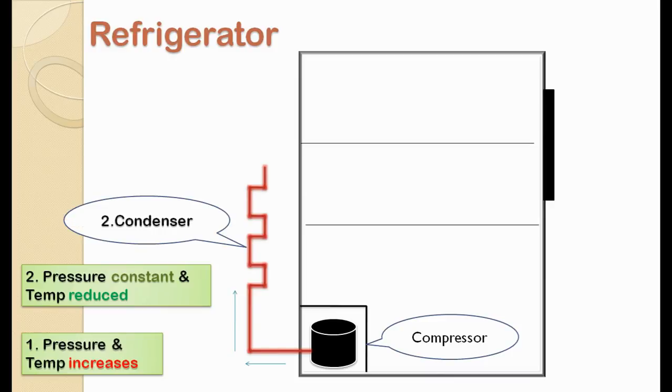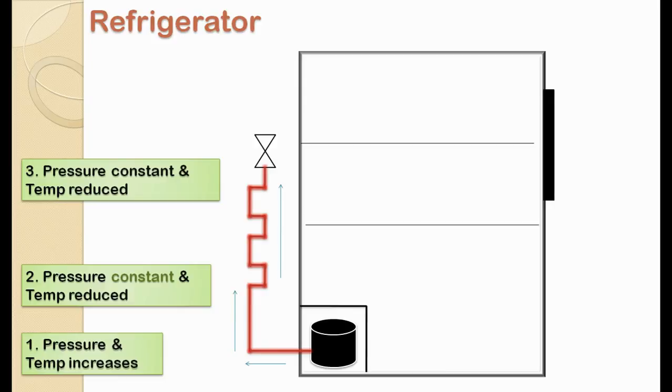Now this part is condenser. The high pressure and high temperature coolant which is coming out of the compressor is passed through this part which is condenser. When it passes through the condenser, heat of the coolant is transferred to the surrounding air which is flowing over the condenser. After passing through the condenser, the pressure of coolant remains same but only the temperature is reduced and the heat is given out to the surrounding air.